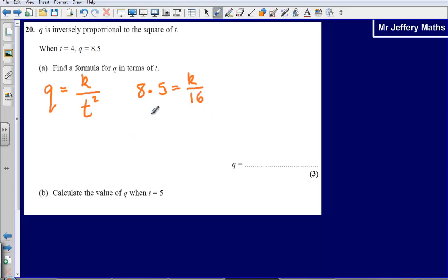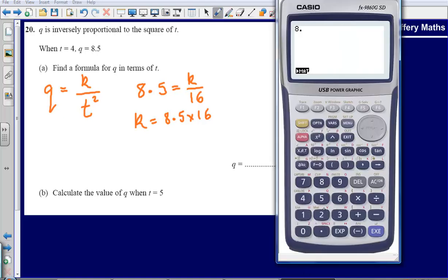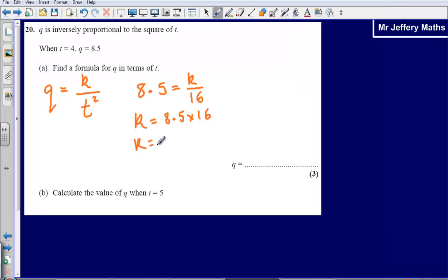Now to figure out what k is equal to, I am just going to solve this equation. k divided by 16 equals 8.5, so k is equal to 8.5 times by 16. And so that is going to give me an answer of, I should be able to work this out in my head, but let's just use the calculator, 8.5 times 16, that gives us an answer of 136. So k is equal to 136.